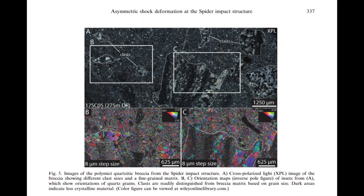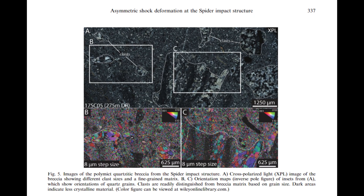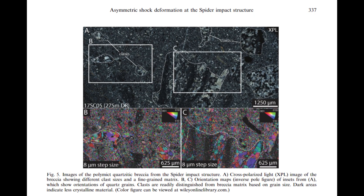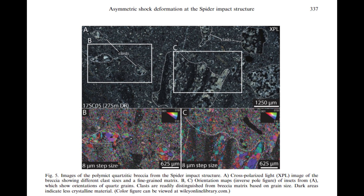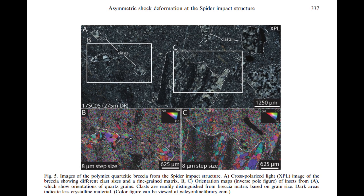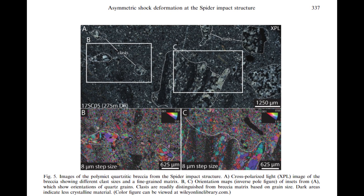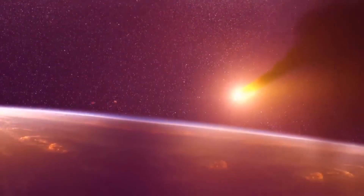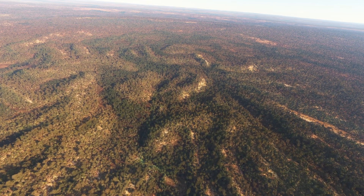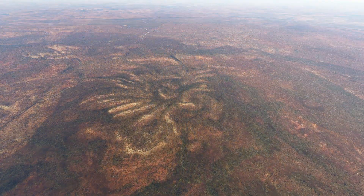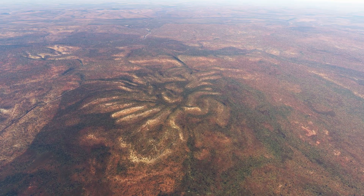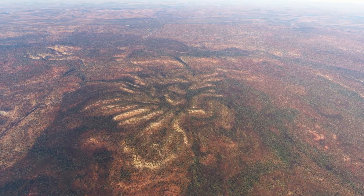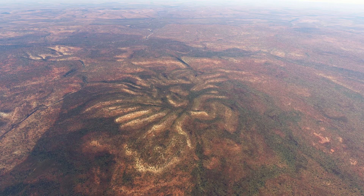The breccia at the Spider Impact Structure is a crucial indicator of the intense forces generated by the meteorite impact. Formed primarily within the imbricated thrust sheets and central dome, this breccia consists of shattered rock fragments cemented together by the extreme pressures and temperatures of the collision. As the meteorite struck, it fractured the local sandstone into chaotic pieces, which were then reassembled into breccia by the heat and force of the impact. The presence of this breccia, along with other impact indicators like shatter cones and shocked quartz, provides clear evidence of the violent processes that shaped the Spider Structure and confirms its origin as an impact crater.